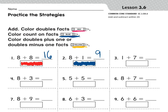But it is definitely a doubles plus one, because I can say eight plus eight is 16 and one more is 17. So that is a doubles plus one.